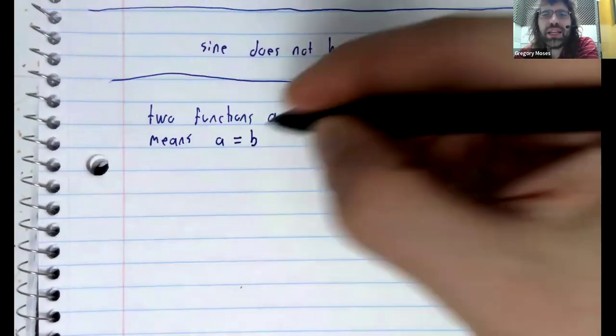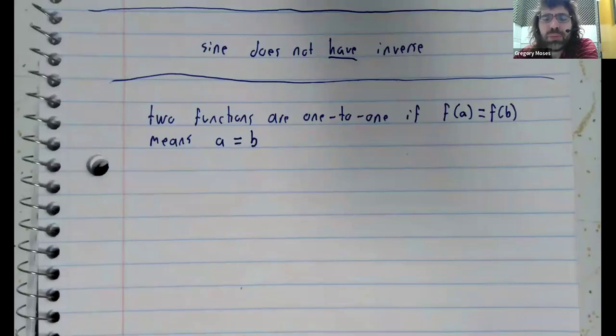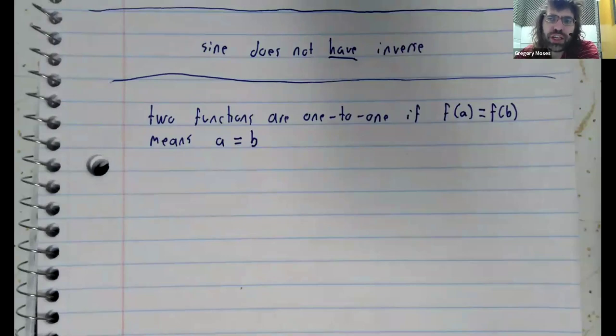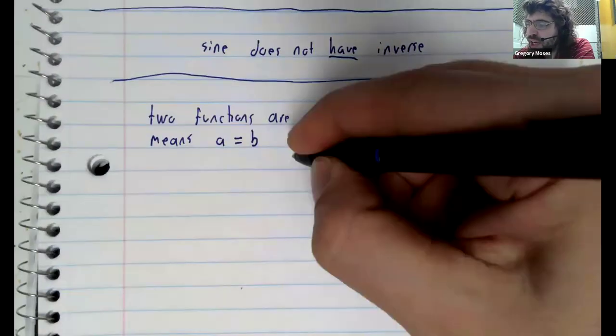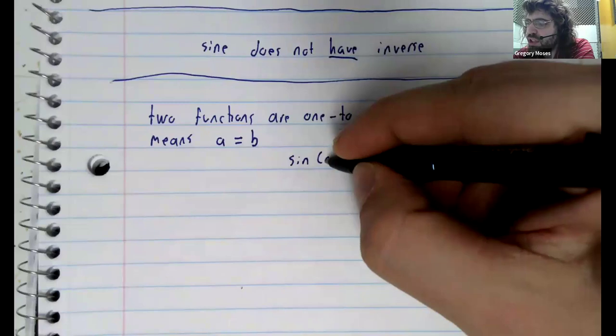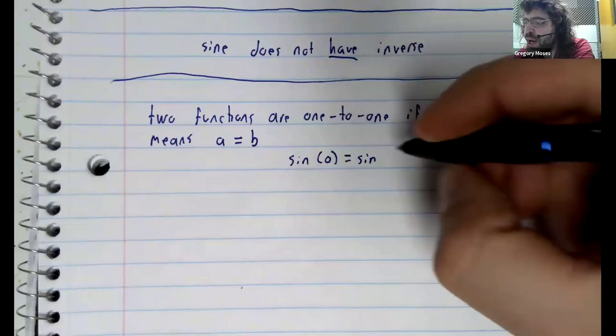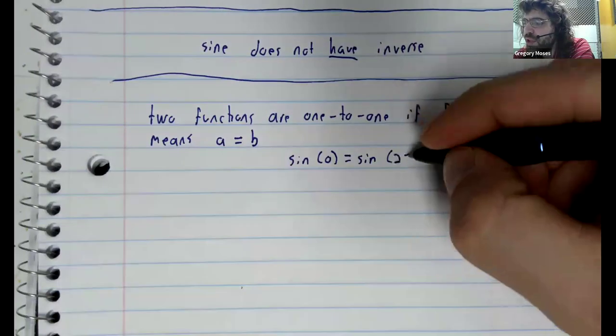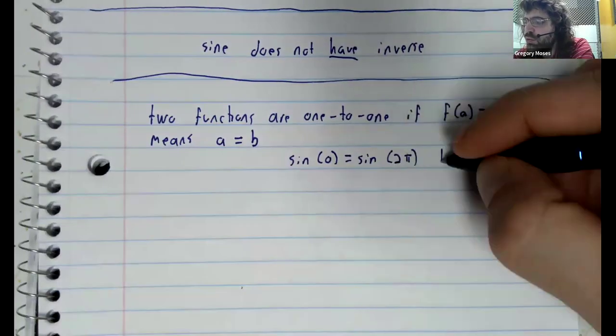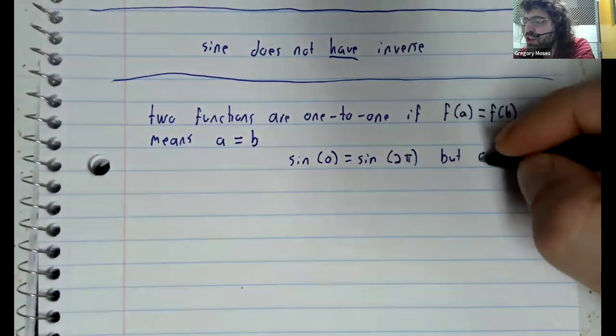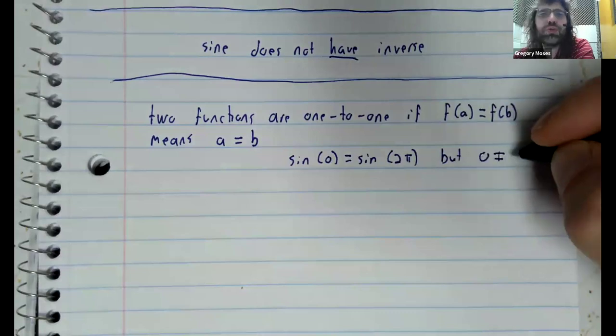And the sine isn't. And I'm using the sine as like our introductory example, but none of the trig functions are one to one. The sine of zero is equal to the sine of two pi, but zero does not equal two pi.